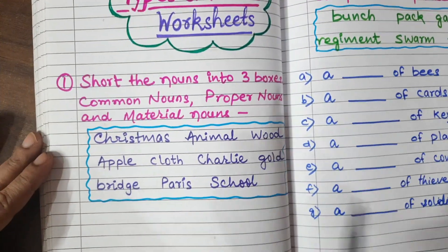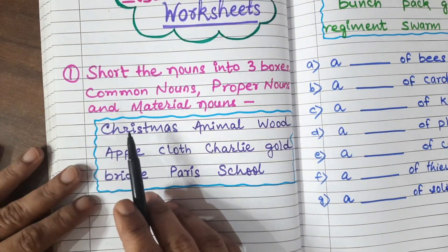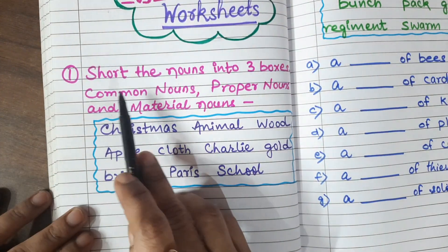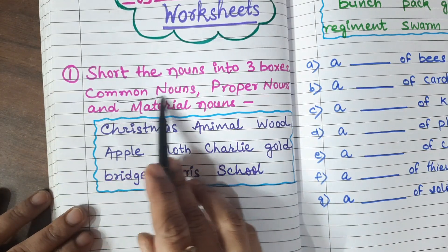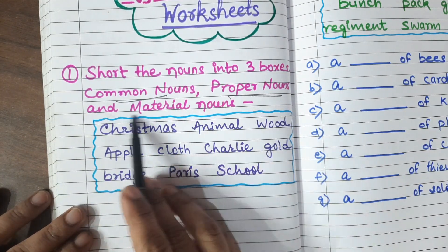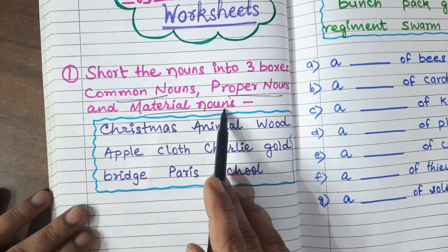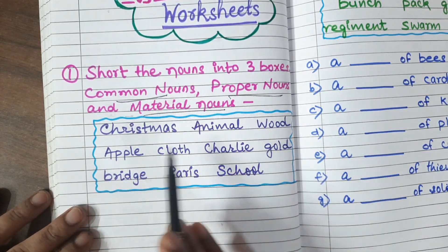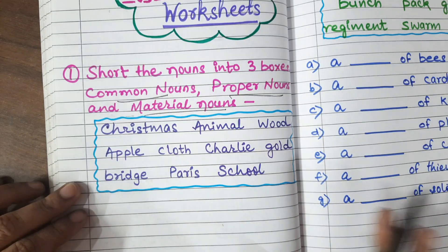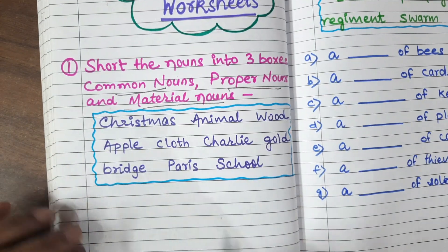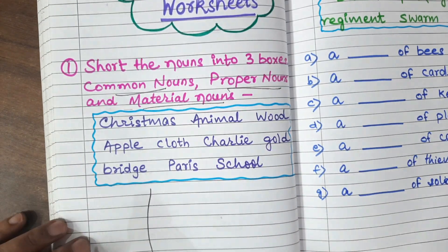The first one is very simple. Sort the nouns into 3 boxes: common nouns, proper nouns and material nouns. To recognize these 3 nouns, we have to write them column by column.